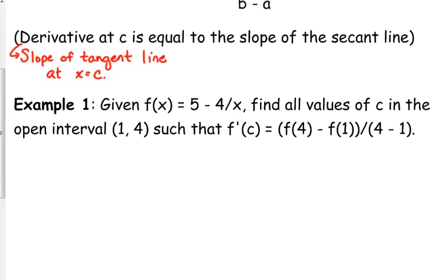So our function is f of x is equal to 5 minus 4 over x. We want to find all values of c in the interval between 1 and 4, such that f prime of c is equal to f of 4 minus f of 1 over 4 minus 1. It's just telling us find what satisfies the mean value theorem. So, first of all, it's pretty much assumed that we can apply the mean value theorem since they're telling us to do this, but let's still be in the habit of checking continuity and checking differentiability.